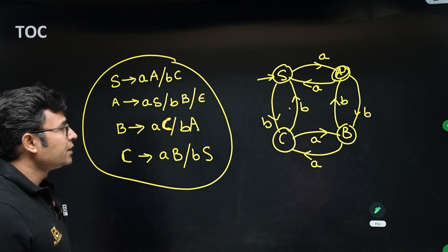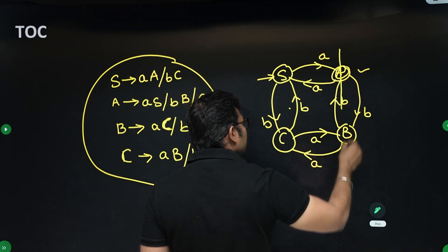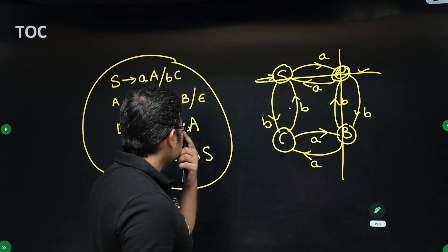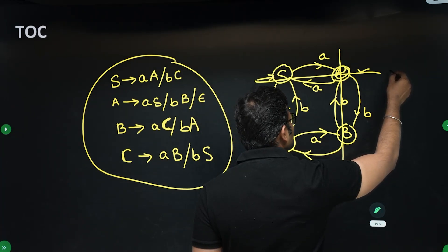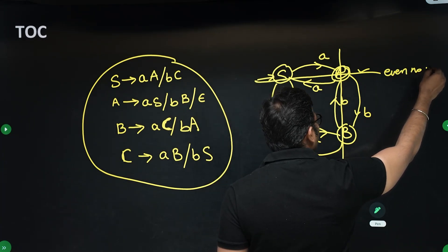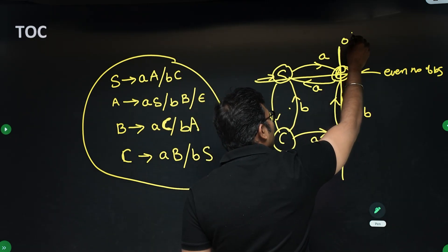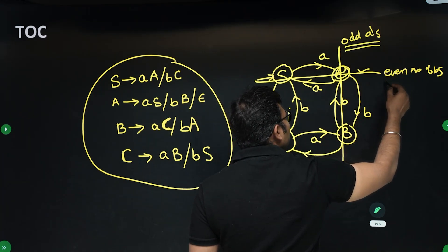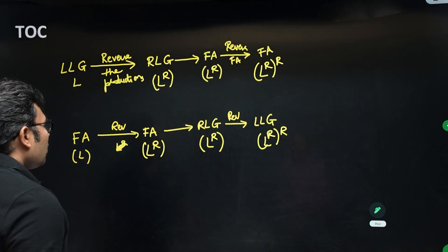Now you can see that this is a grid machine. The final state is at the intersection of two lines. One line says even number of b's, the other says odd number of a's. Therefore the language is the set of all strings with an odd number of a's and an even number of b's.